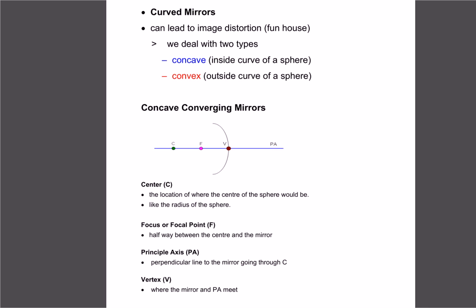Today we're going to look at how images reflect off curved mirrors. With flat mirrors, the image was the same distance away from the mirror and the only thing that was flipped was left to right. With curved mirrors, the image won't necessarily be the same size — quite often it'll be bigger or smaller — and quite often the image also gets flipped upside down.